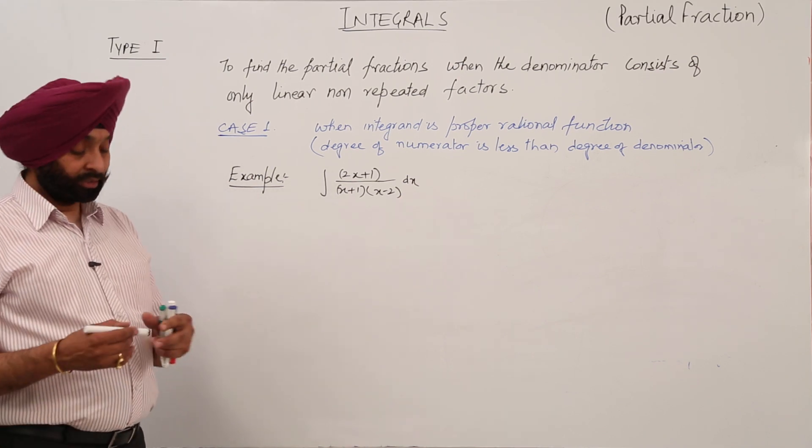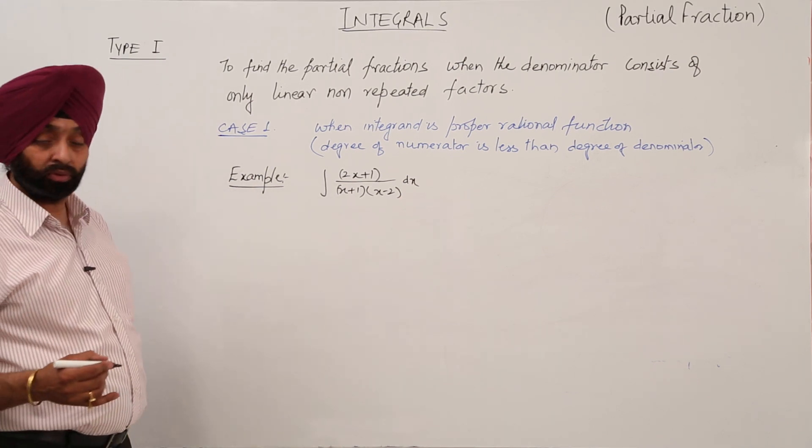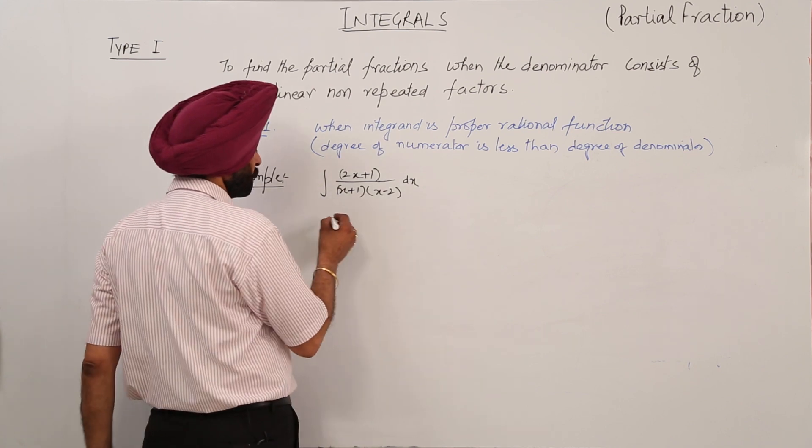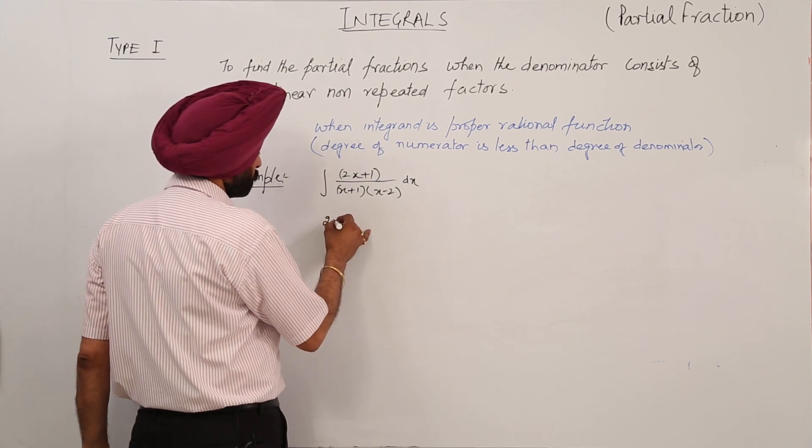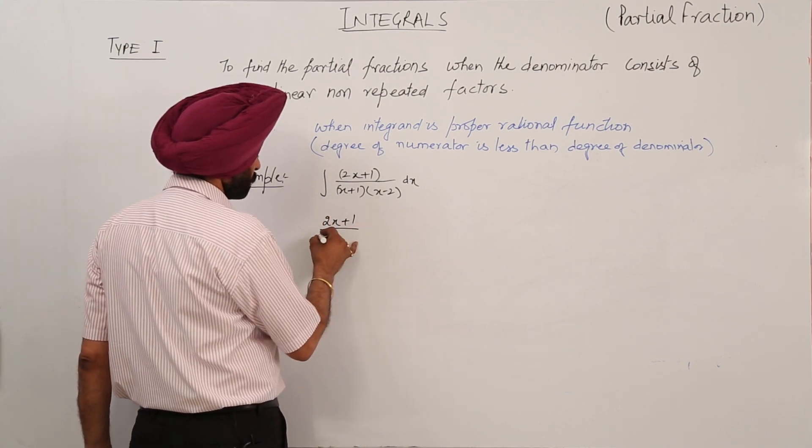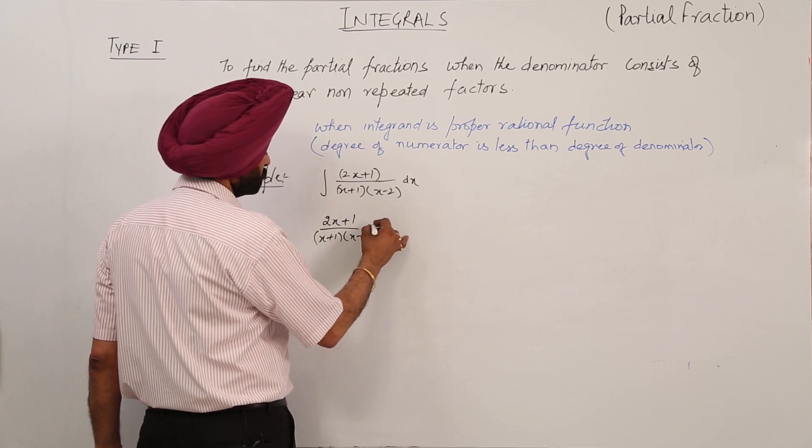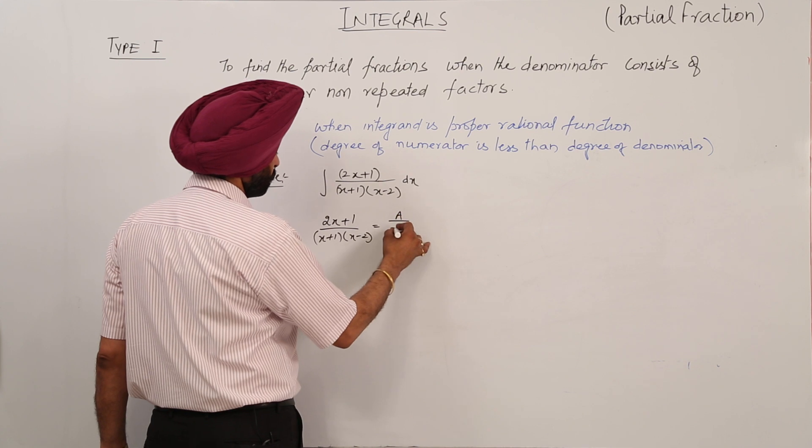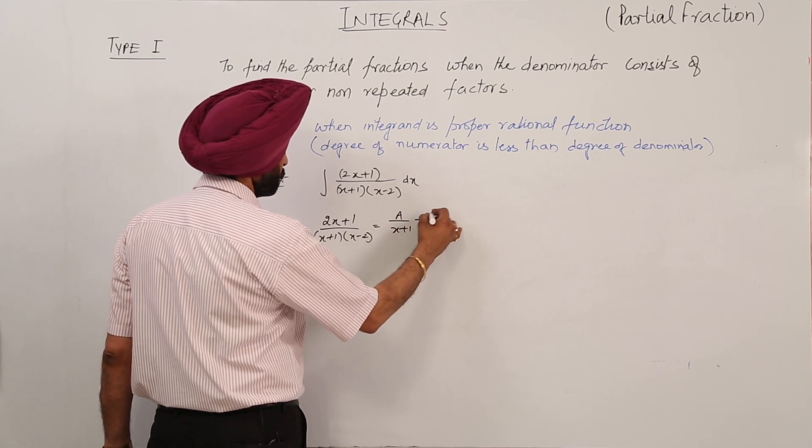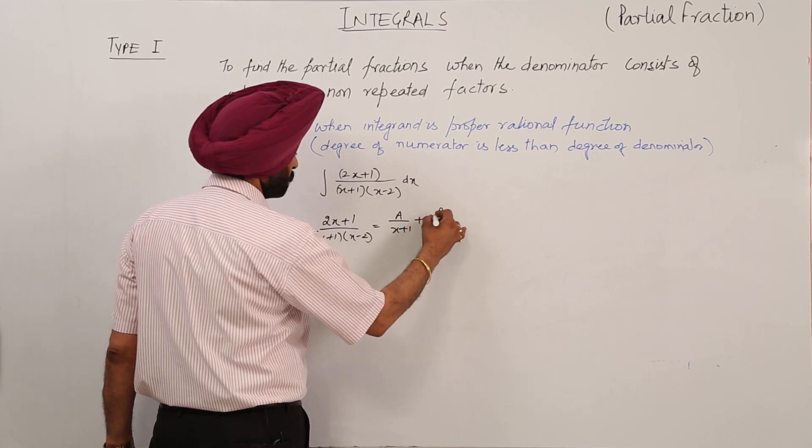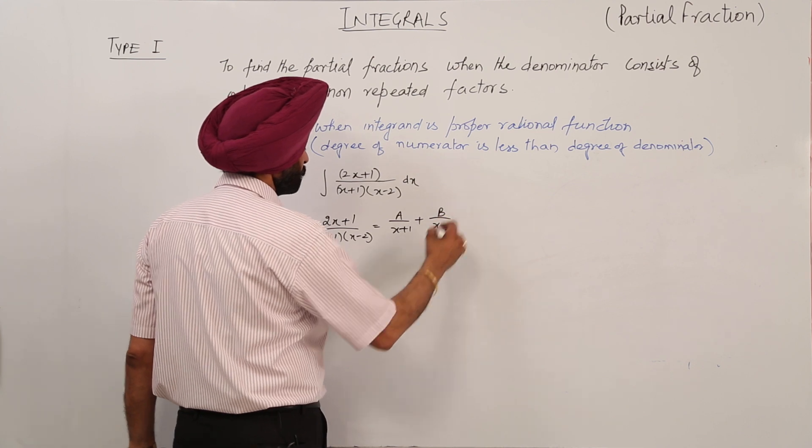Let's go for an example. This is a question which we are going to solve. We will be writing 2x plus 1 upon (x plus 1)(x minus 2) is equal to A upon x plus 1 plus B upon x minus 2.